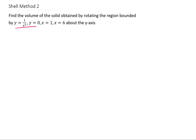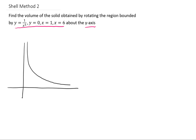Let's take a look at the region we're going to rotate around the y-axis. A graph of 1 over x to the fifth looks something like this in the first quadrant. y equals zero is the x-axis, x equals one is this vertical line, and x equals six is this vertical line. So the region in question looks something like that.